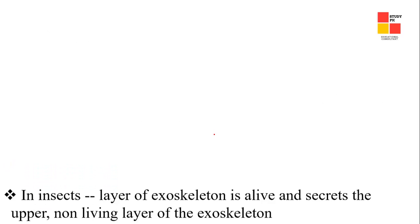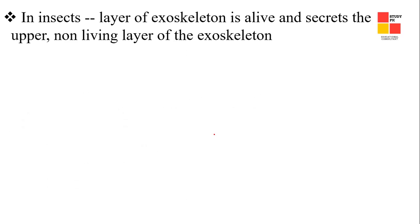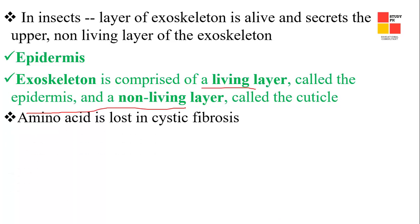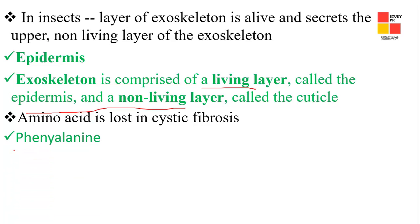Next one: in insects, the layer of exoskeleton that is alive and secretes the upper non-living layer is called the epidermis. The exoskeleton has two layers — the living layer called the epidermis and the non-living layer called the cuticle. Next one: the amino acid lost in cystic fibrosis is phenylalanine.